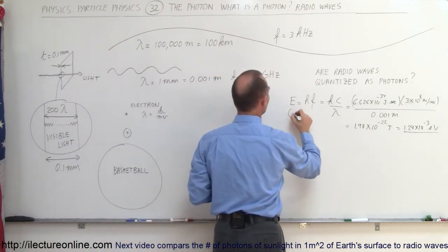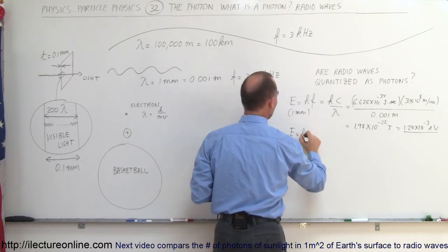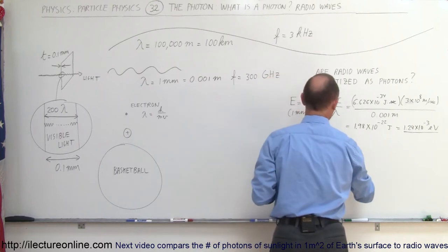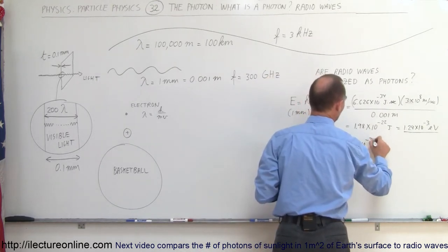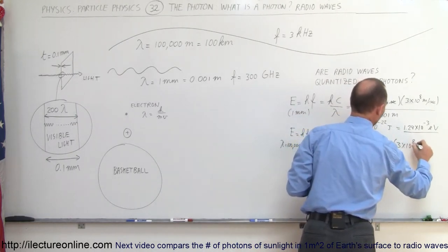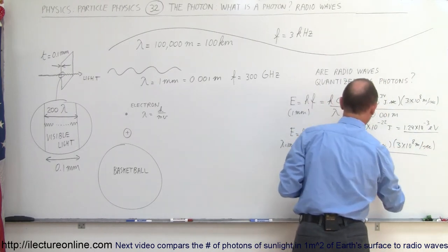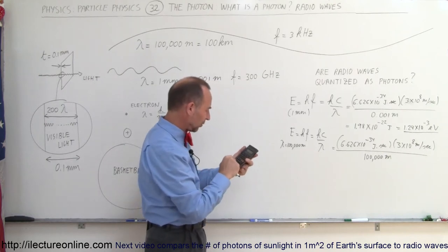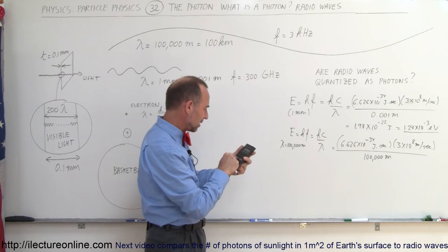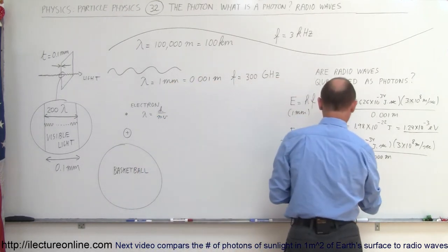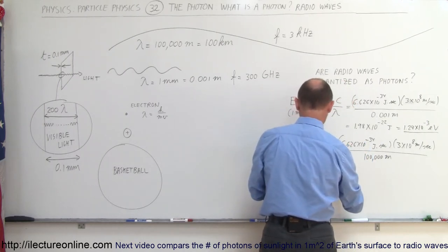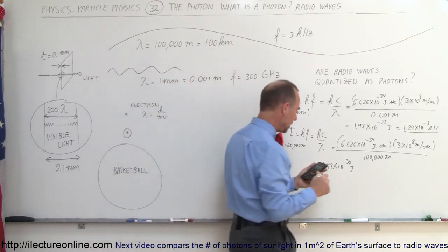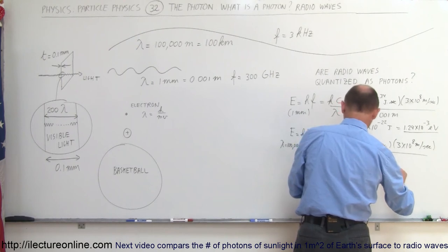Now for a wavelength of 100,000 meters: E = hf = hc/λ, so that's 6.626 × 10⁻³⁴ joules·seconds times the speed of light, divided by 100,000 meters. That's an enormous difference in wavelength. Computing 6.626 × 10⁻³⁴ times 3 × 10⁸ divided by 100,000, we get an energy of 1.98 × 10⁻³⁰ joules. Converting to electron volts, that equals 1.24 × 10⁻¹¹ electron volts.